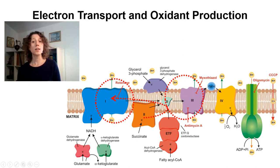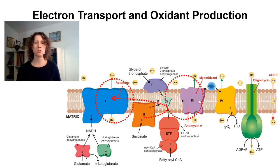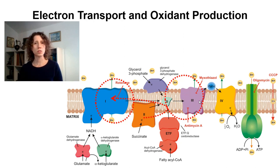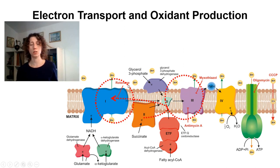On the other hand, antimycin A — an inhibitor of complex 3 that increases the amount of semiquinone and doesn't let the semiquinone proceed within the cycle — will increase the leakage of electrons in complex 3, generating superoxide radicals. These inhibitors will also increase reduction in coenzyme Q and complex 1, and therefore can increase the production of superoxide in complex 1 as well.